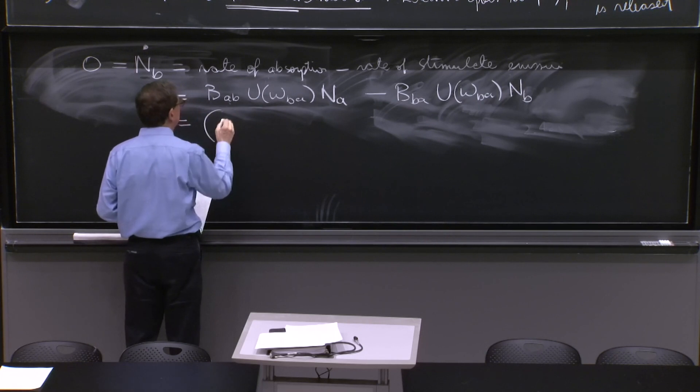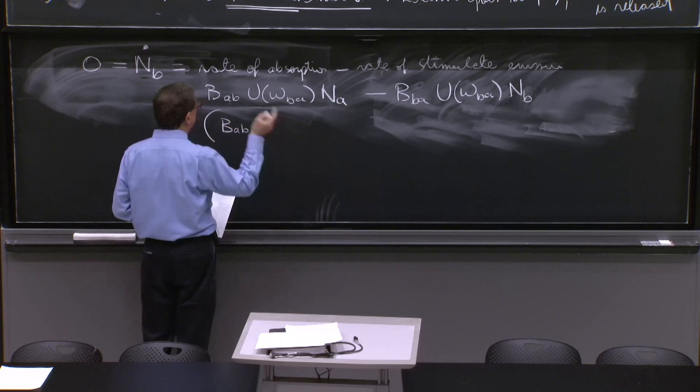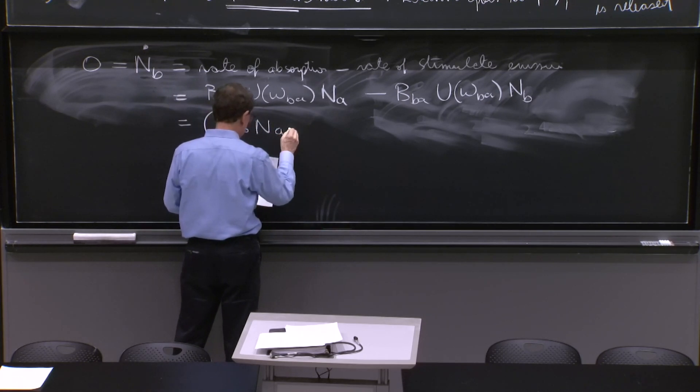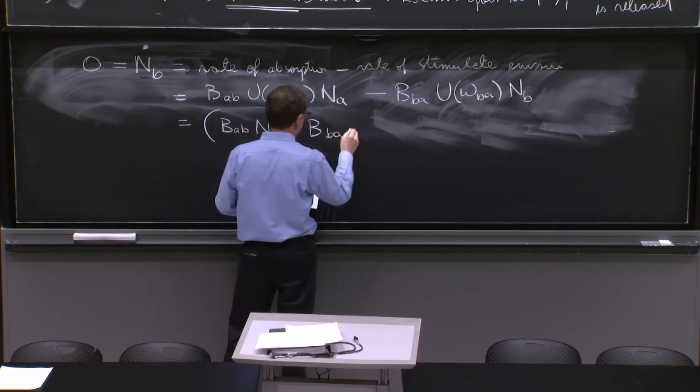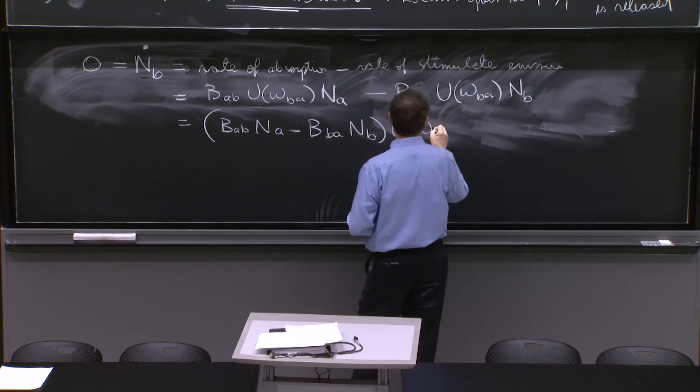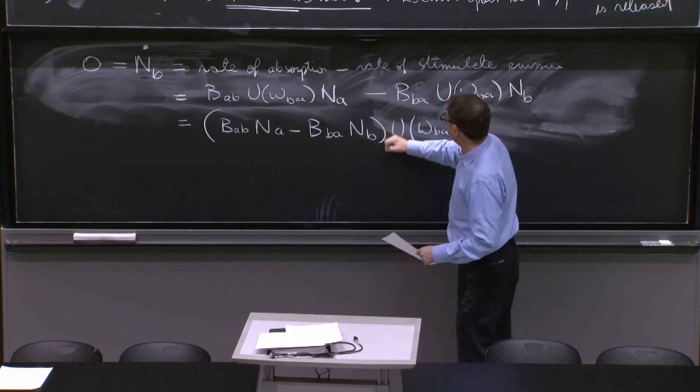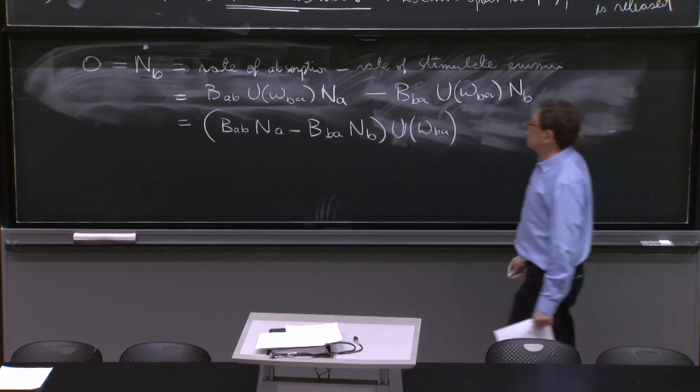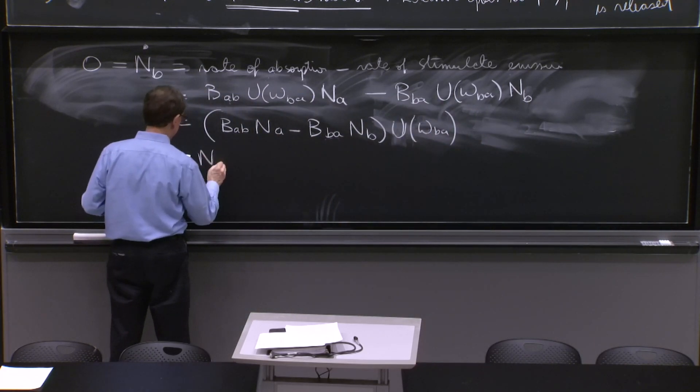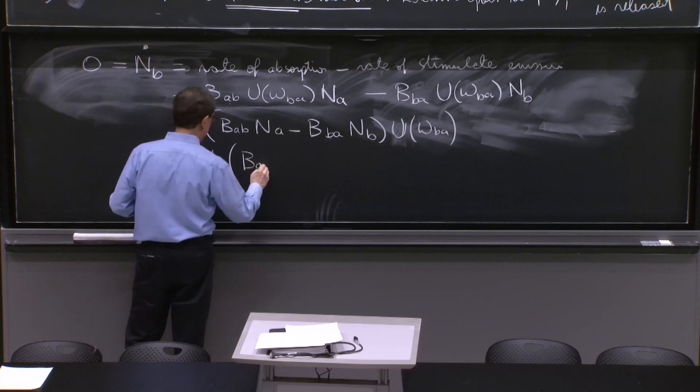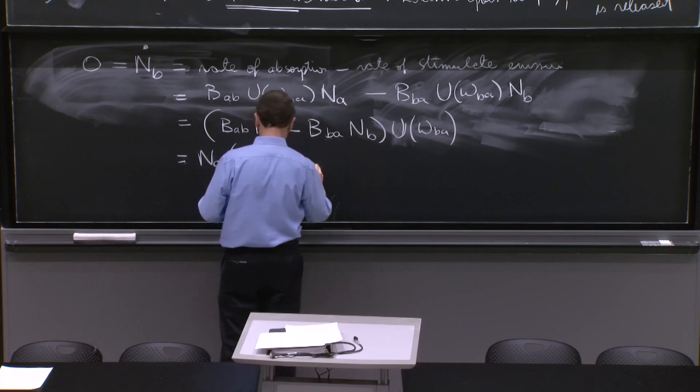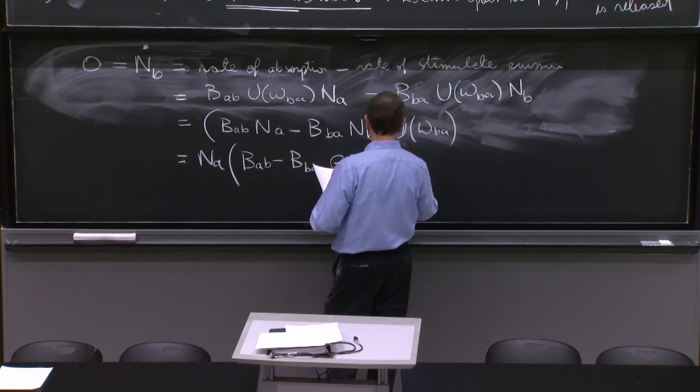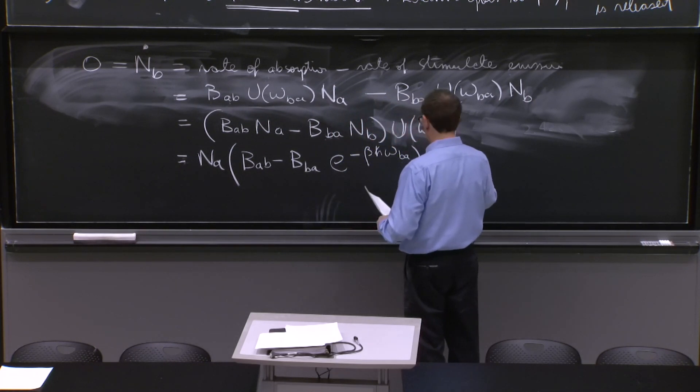And this is the wrong calculation, I must say, because we're missing that extra process that was intuitive to Einstein but to us it's a little less clear. NB times U of ωBA. I can do one more little thing. I can factor an NA.